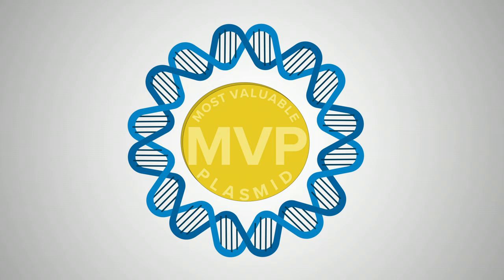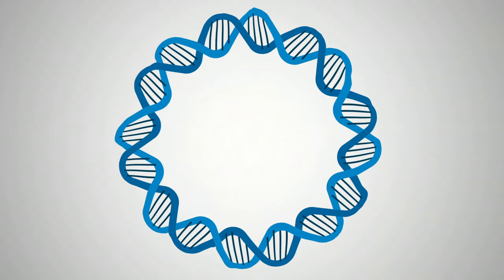Plasmids created in the lab are known as constructs or vectors. To understand what plasmids can do, let's break down its parts using a plasmid map.